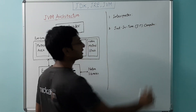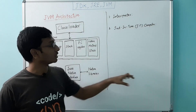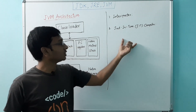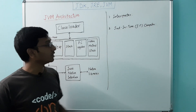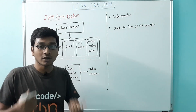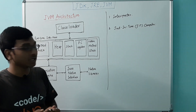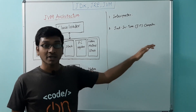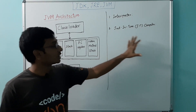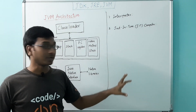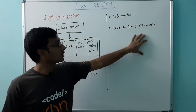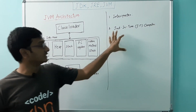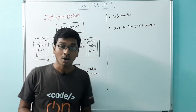The JIT compiler compiles the often-called methods — the bytecode of frequently called methods is compiled into machine code. The JVM automatically monitors frequently executed methods and compiles them into machine code. This compilation is done in a separate thread so that execution of the current program is not interrupted. Now that the JIT compiler has compiled the often-called methods into machine code, they run faster. The JIT compiler is responsible for optimizing Java programs.